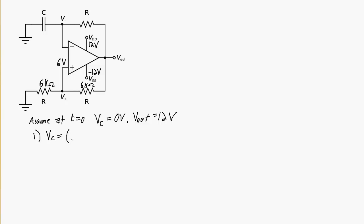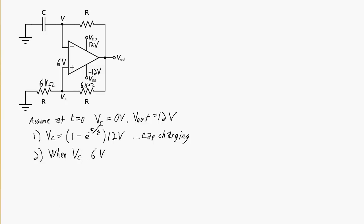At that point in time, the voltage across the capacitor, starting at time zero, is going to be equal to (1 minus e to the negative t over tau) times 12 volts — it's trying to charge up to 12 volts. This is the charging capacitor equation. But when the voltage across the capacitor becomes greater than 6 volts, the inverting terminal becomes higher voltage than the non-inverting terminal.